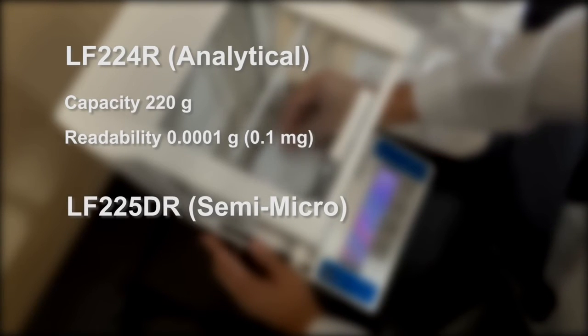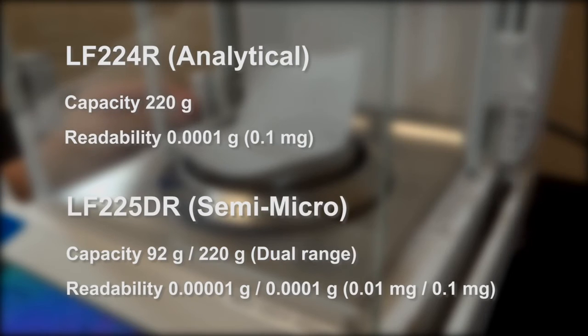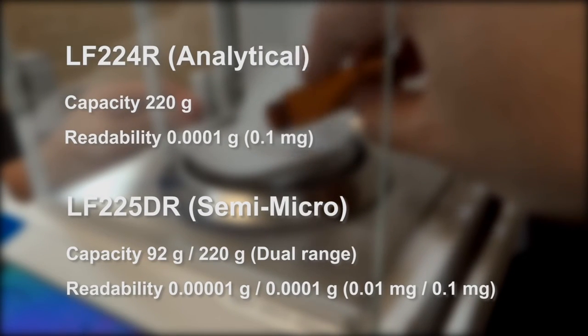The LF-225DR is dual range and offers semi-micro weighing at 0.01 milligrams and analytical weighing at 0.1 milligrams.